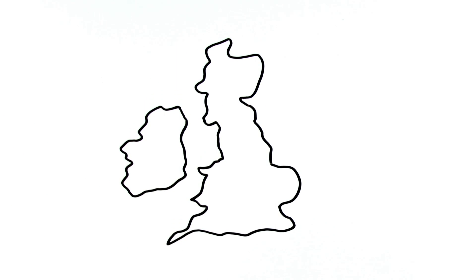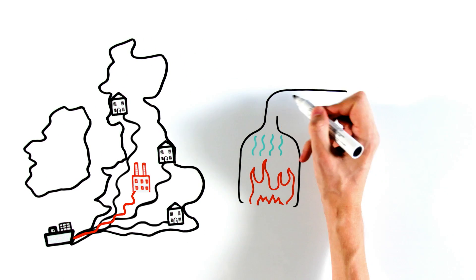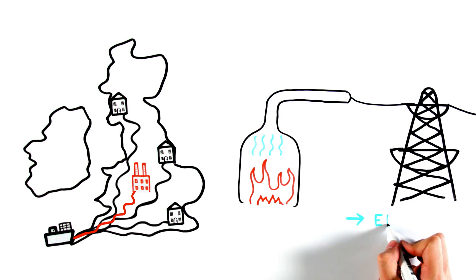Right, let's head back to good old Blighty. While some of the gas is delivered to homes, most of it is piped directly to power stations, where it's burnt to drive turbines that then produce electricity.